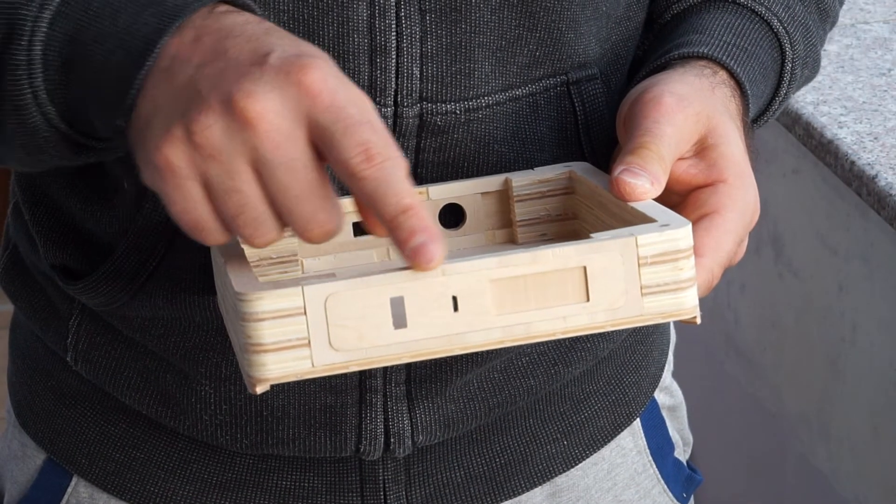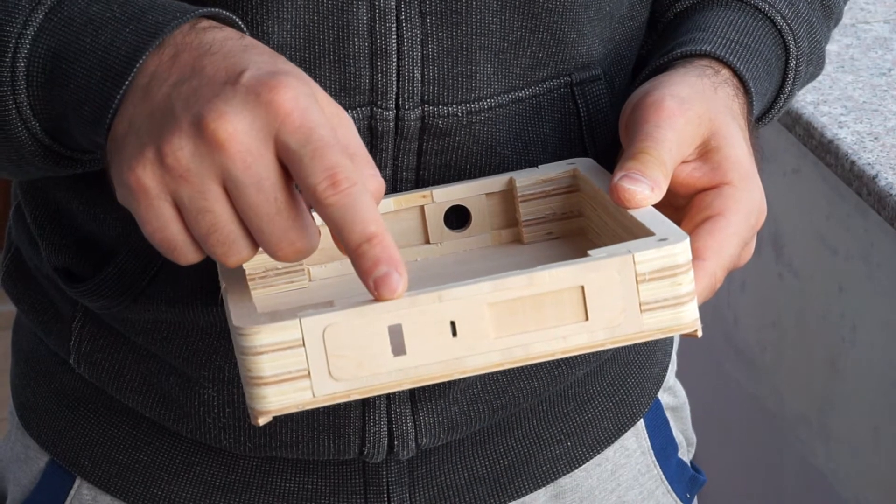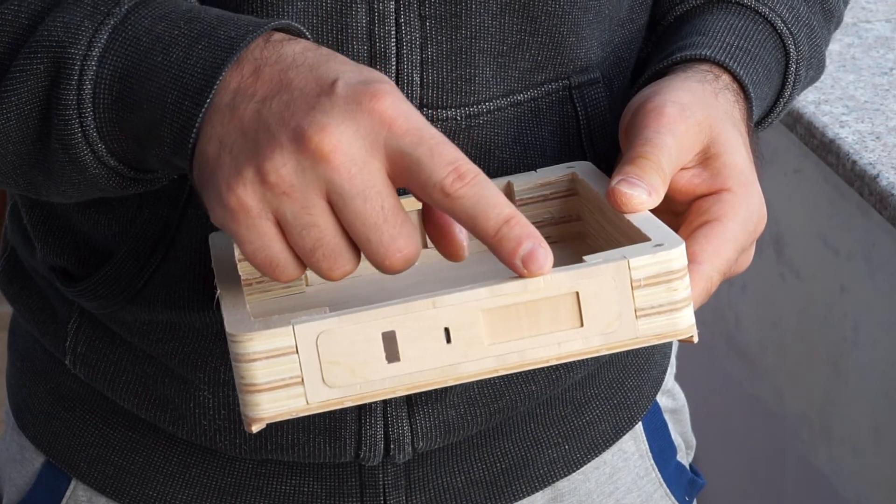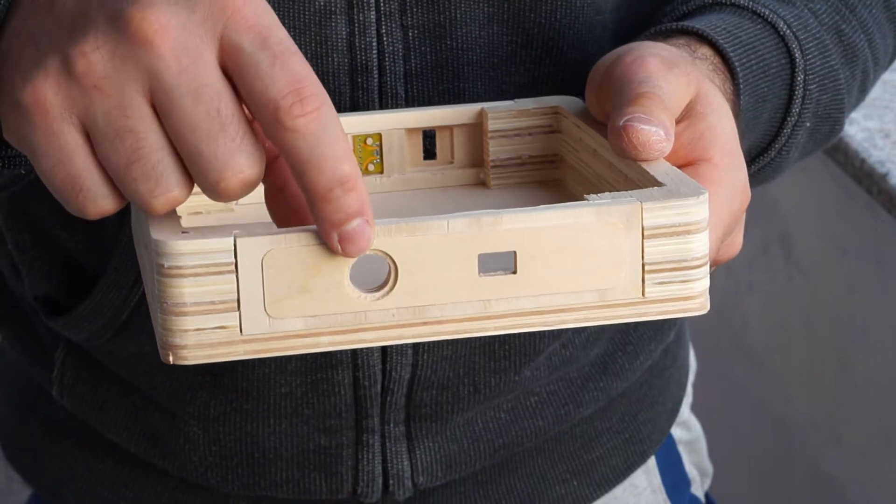Then I glued the other two side pieces. You can see the cutouts for the USB port, the battery level indicator, the LED light and the light switch.